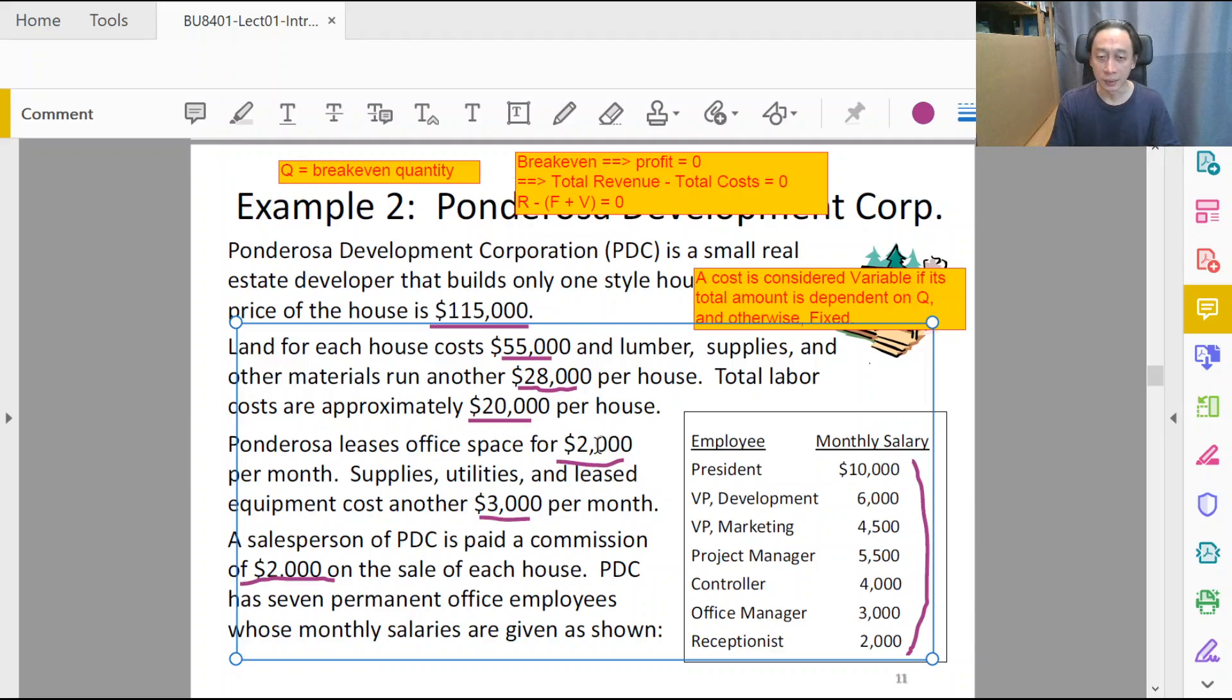How about office space? Office space, the longer in terms of number of months we sell, the more money we pay, right? That's true, it's variable in time. But is it possible that if we don't sell any house in a month, do we still have to pay the two thousand dollars? Possible, in fact a must.